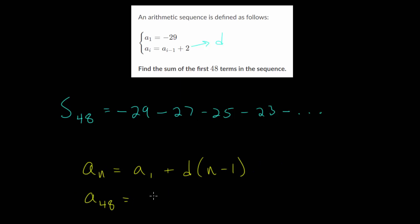So we want the 48th term, so A sub 48 will be our first term, minus 29, plus that common difference, 2, multiplied by n minus 1. So in this case, n is 48, so this will be 47. We can simplify. So we have minus 29 plus 2 times 47 is really just 94. And if we take away 30 from 94, that gives us 64, and we'll add one back. So 65 will be our last term here. So we can put plus 63 plus 65.